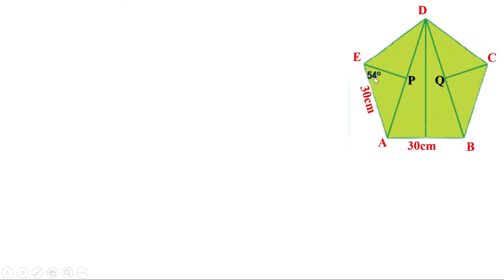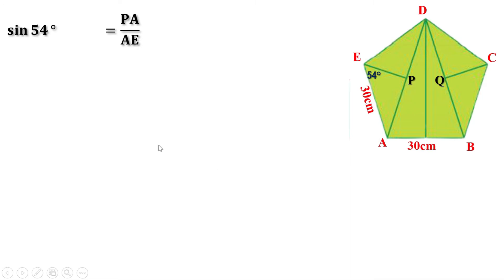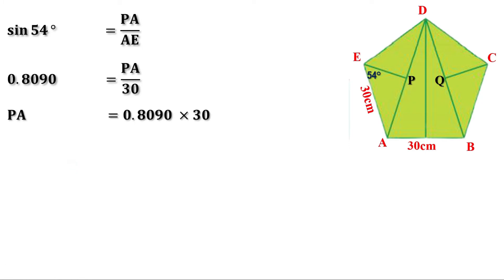We need to find this side, which is the opposite side of this angle, and this side is given — that is the hypotenuse. The ratio of opposite side to hypotenuse is sine. So let us take sine 54. Sine 54 equals opposite side by hypotenuse, or PA by AE. The value of sine 54 is 0.8090 and AE is 30 centimeters. Replacing the values, we can write 0.8090 equals PA by 30. Taking 30 to the other side, PA equals 0.8090 into 30. Multiplying, we get 24.27 centimeters.